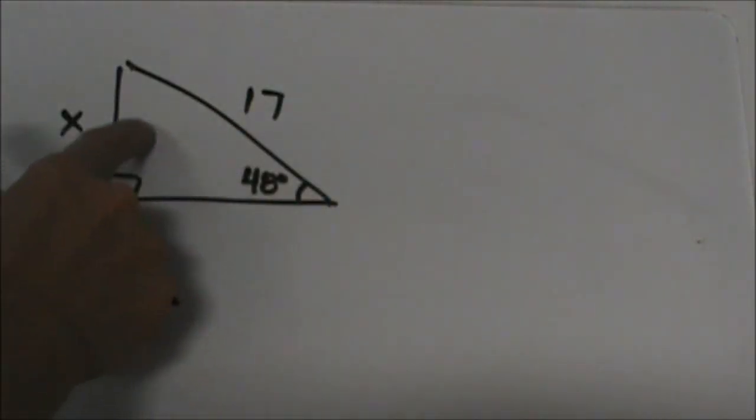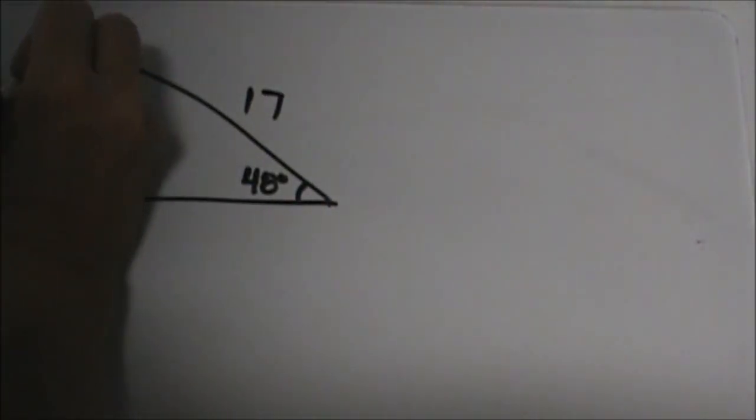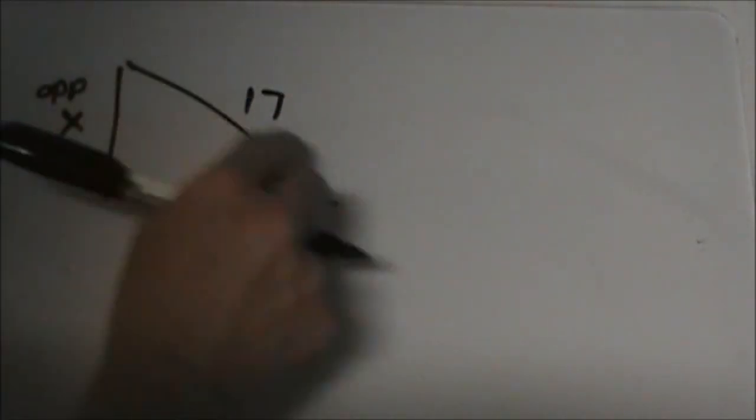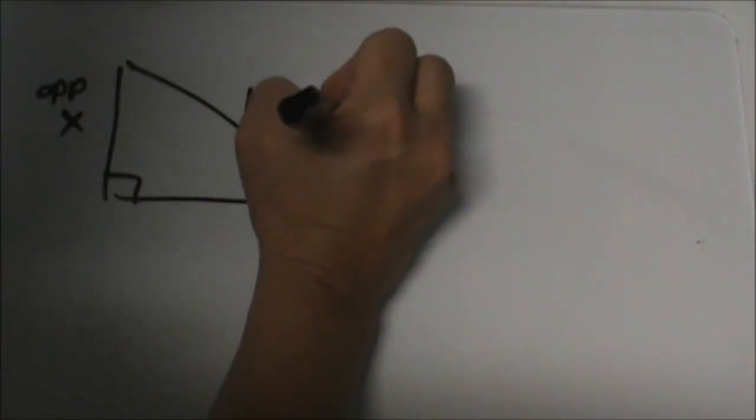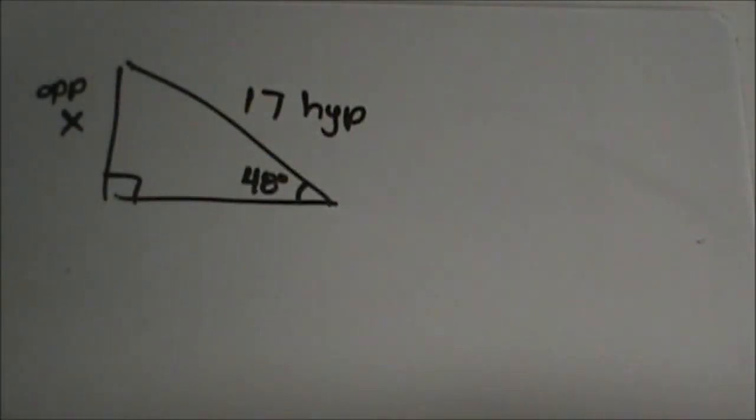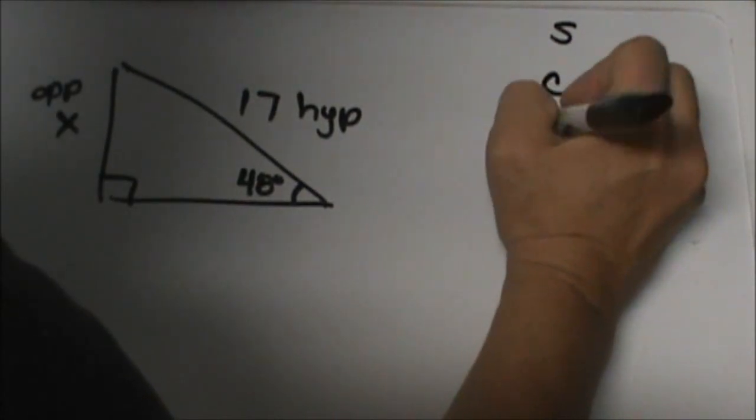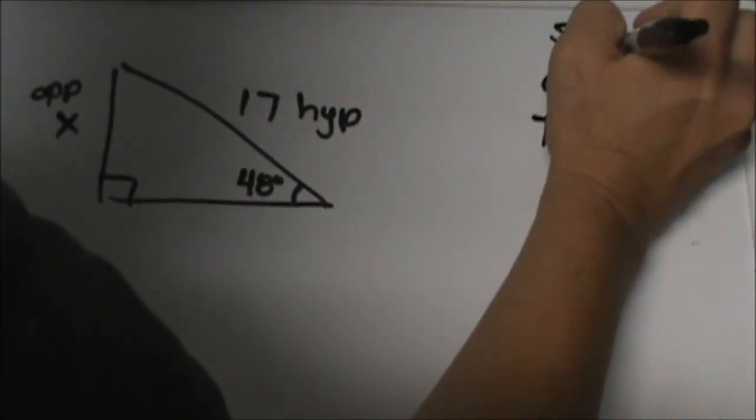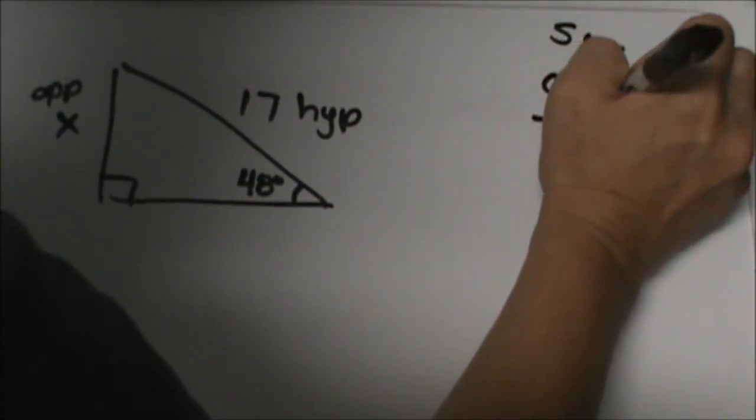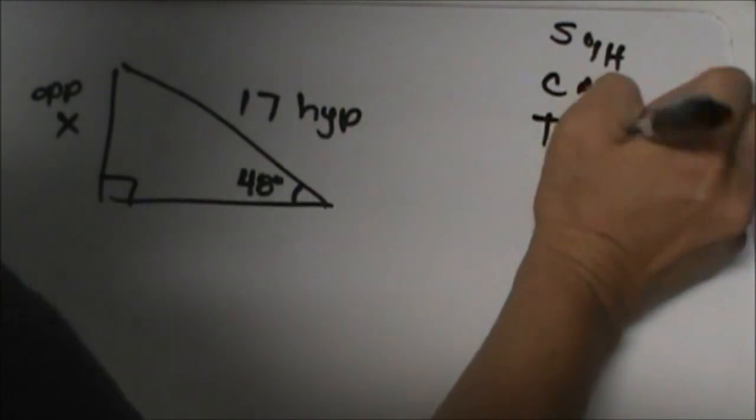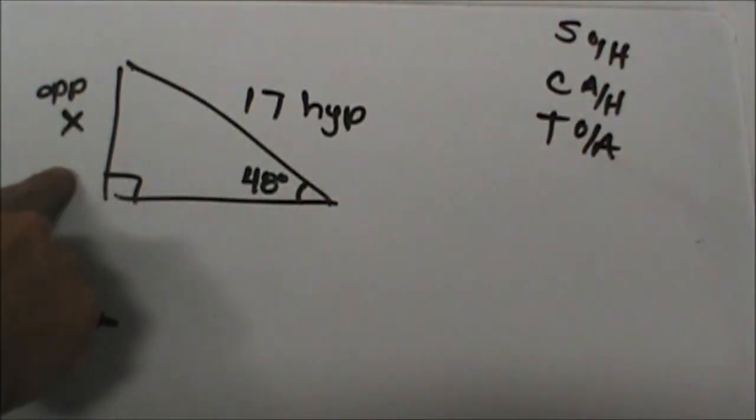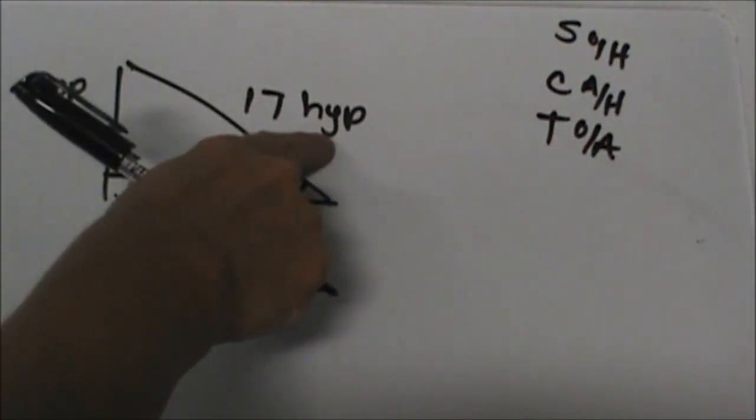From here, this side x is the opposite. And the side that is marked 17 is the hypotenuse. So we have sine, cosine. Let me jot this down again. I will try not to erase them this time.